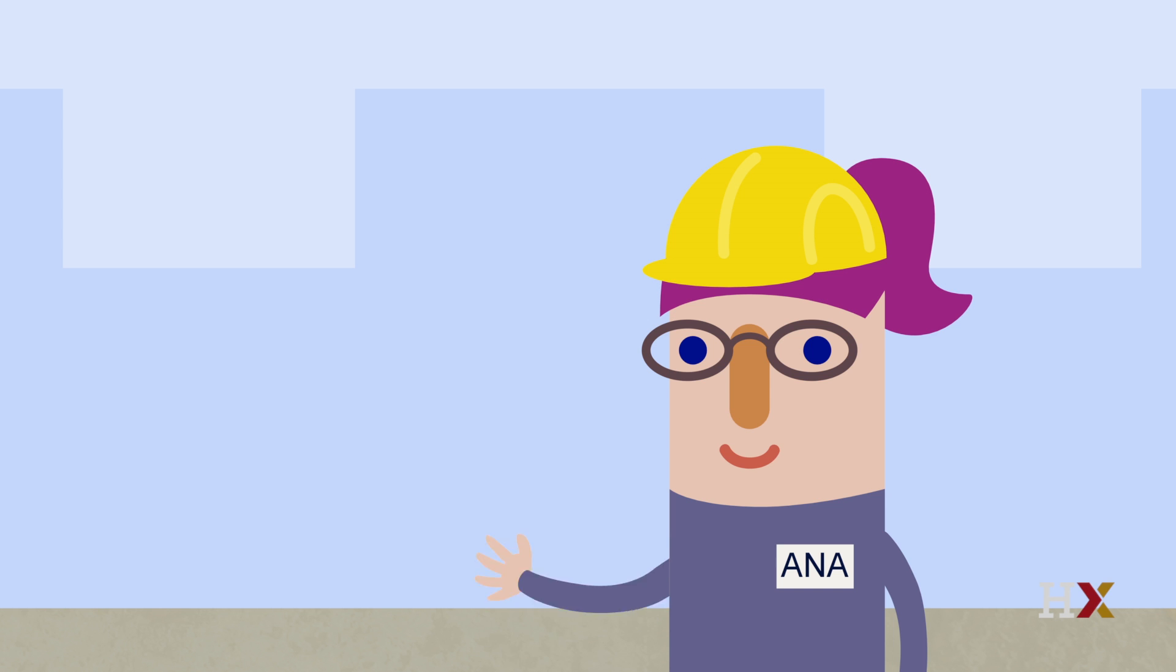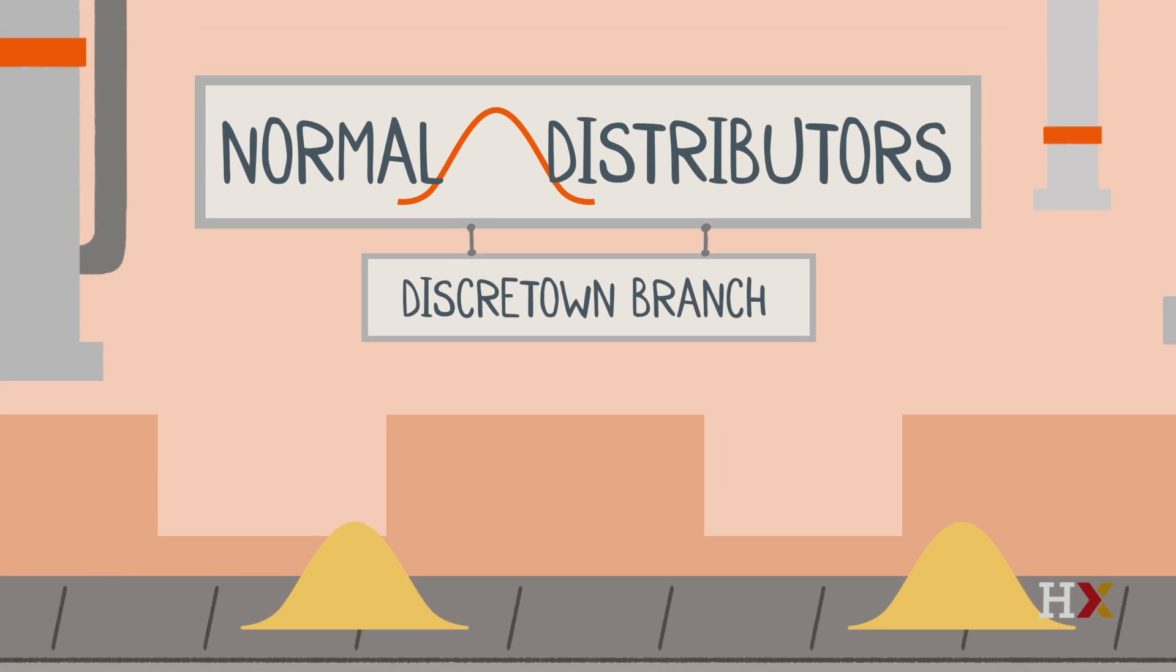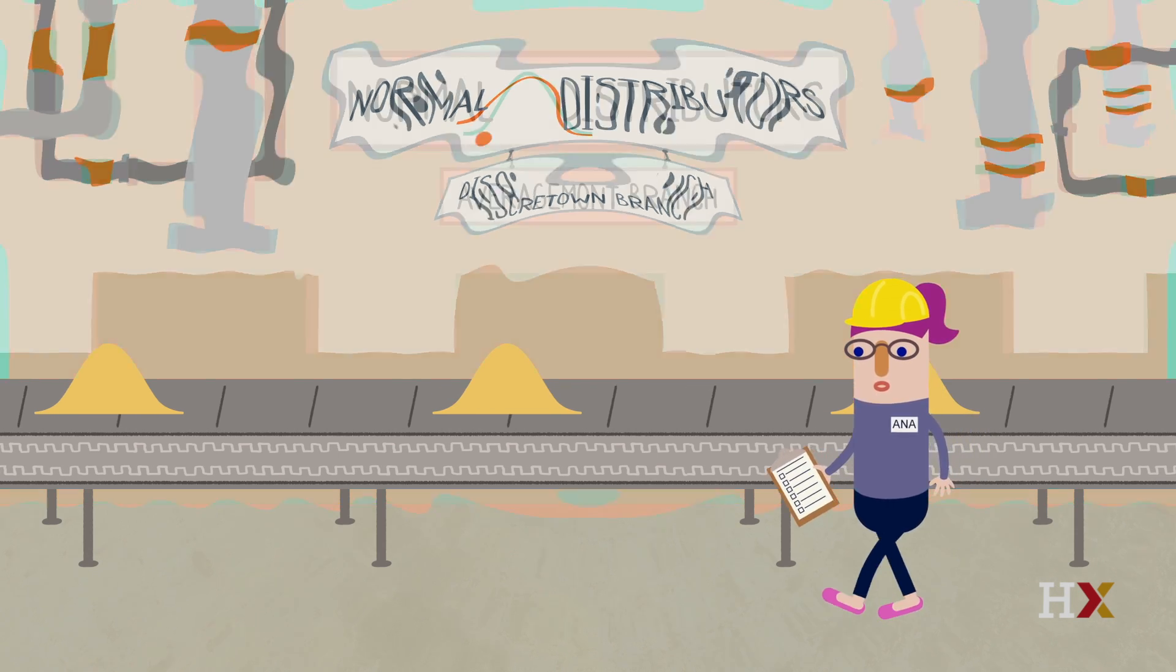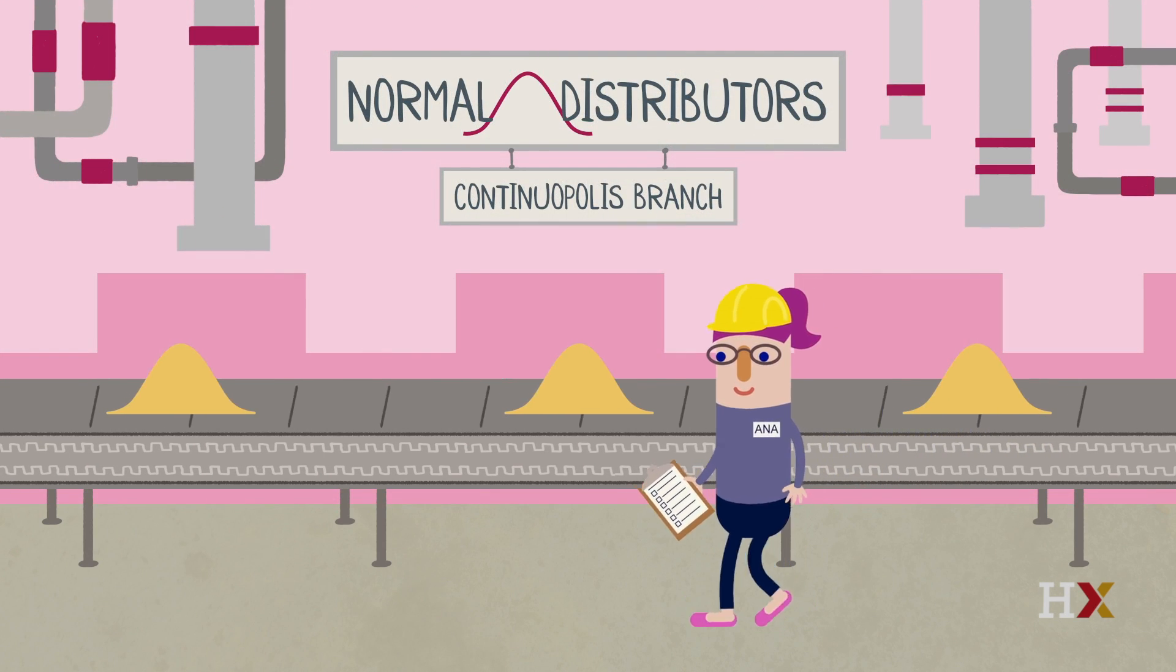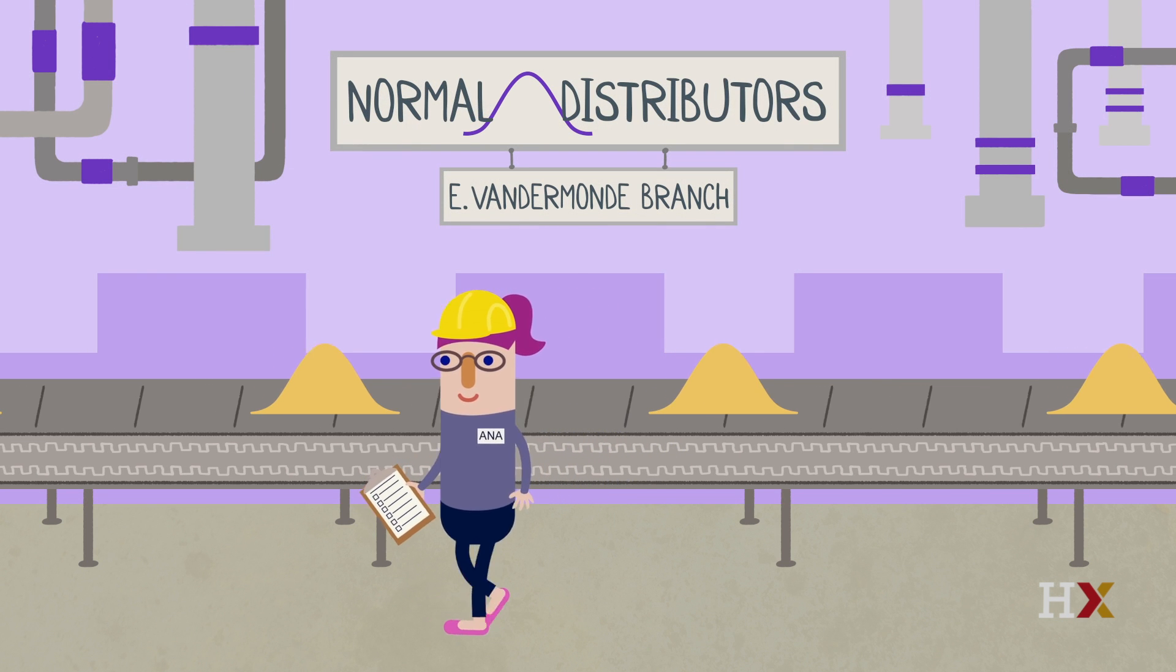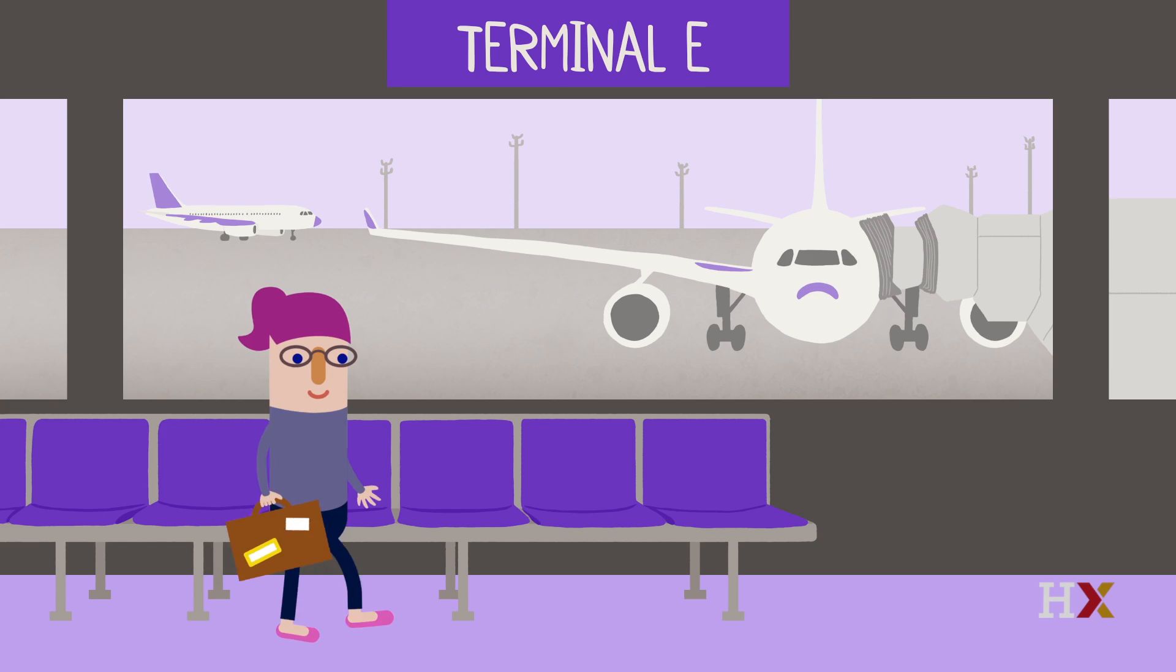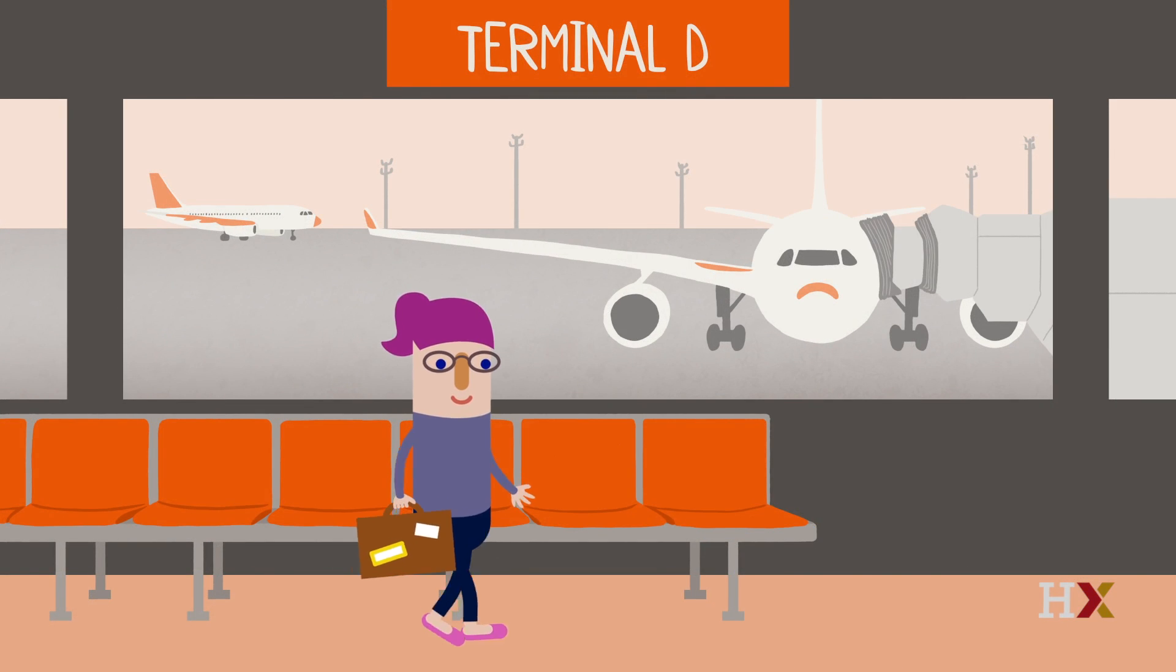Anna Markov works as a quality inspector for a company called Normal Distributors. The company has manufacturing plants in five cities. Anna routinely conducts surprise inspections at each site to check for abnormalities. She flies from city to city randomly through airports with direct connecting flights.